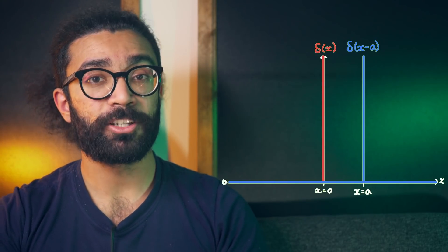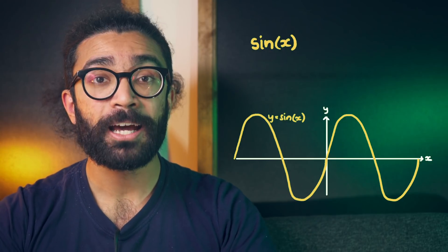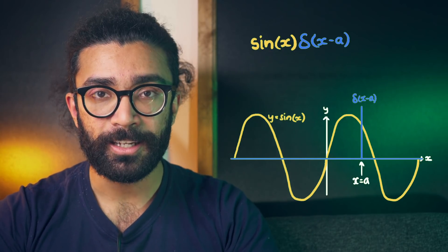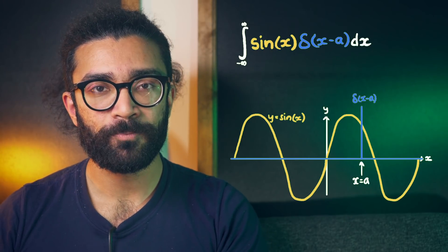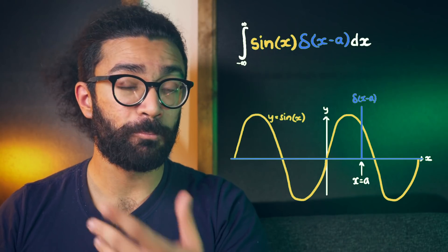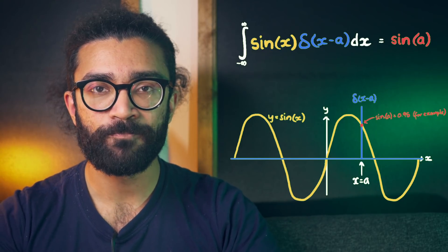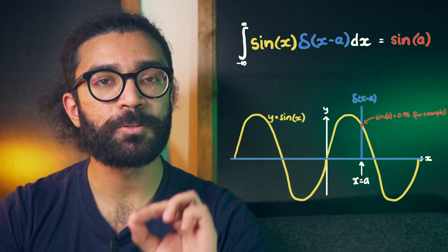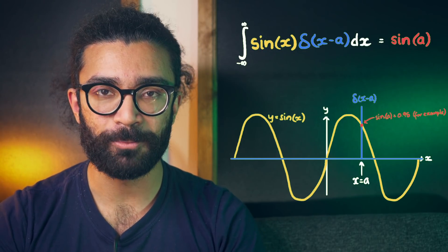The reason this is important is because we can now take another function, let's say the sine function, and we can multiply it by delta of x minus a. Then, if we were to integrate this whole thing, then what we'd end up with is the value of the multiplied function, in this case sine, at x equals a. In other words, when used in this way, the delta function can be used to pick out specific values of any function. Pretty cool property, in my opinion.